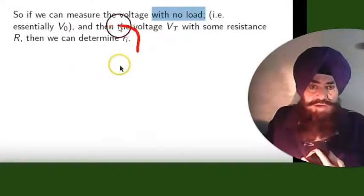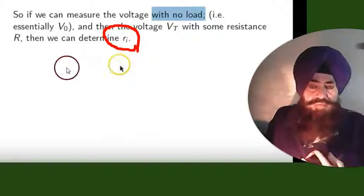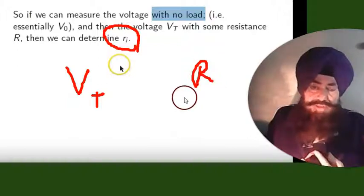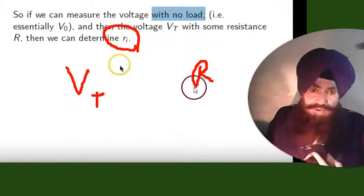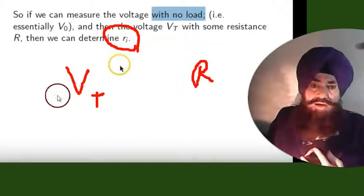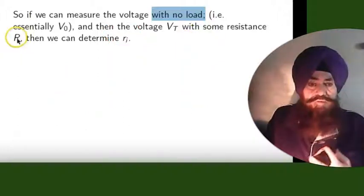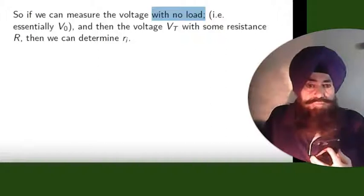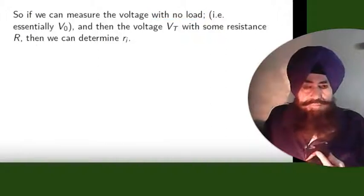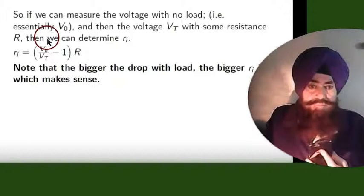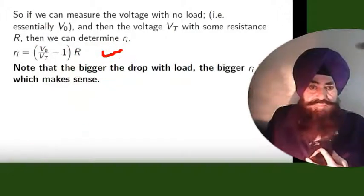You can find the value of ri by measuring V₀, then connecting any external resistance R to the voltage source and measuring VT. This gives you the value of ri.